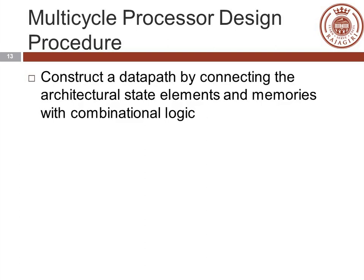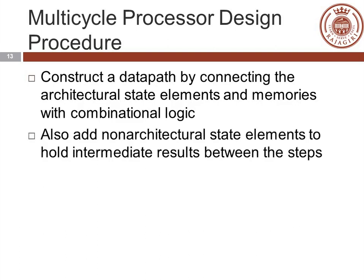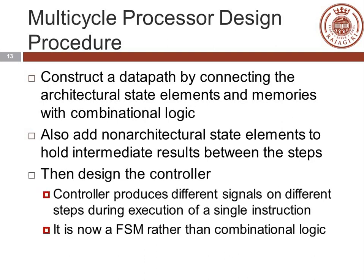We will see the design procedures for the multi-cycle processor. First, we will construct a data path by connecting the architectural state elements and memories with combinational logic. Then we will add non-architectural state elements to hold intermediate results between steps — this was not required in single-cycle processors. Then we will design the controller, which produces different signals on different steps during execution of a single instruction. It is now an FSM rather than combinational logic.